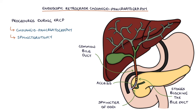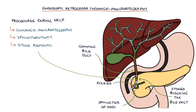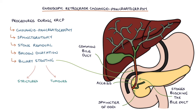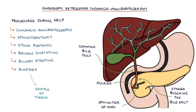A sphincterotomy involves making a cut in the sphincter to dilate it and make it easier to remove stones or for the bile duct to drain. A stone removal procedure involves inserting a basket into the duct and pulling it through the common bile duct to remove any stones — essentially sweeping the bile duct. Balloon dilatation involves inserting a balloon into the common bile duct and inflating it at specific points to treat strictures. Biliary stenting involves inserting a stent into the duct to keep it patent so it can continue to drain, and can be used to treat strictures or tumours. Finally, biopsies can also be taken during an ERCP procedure to diagnose any obstructing lesions.